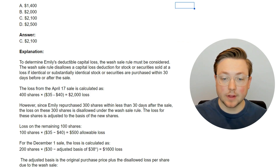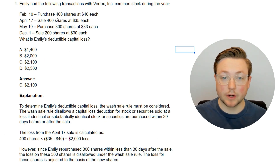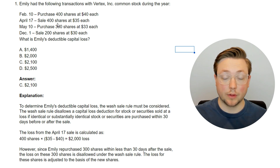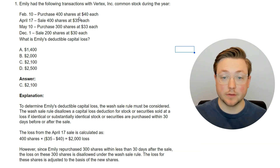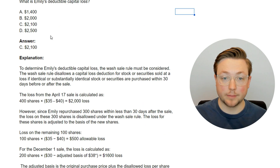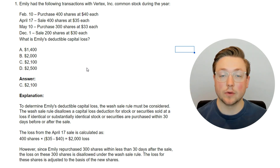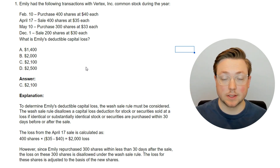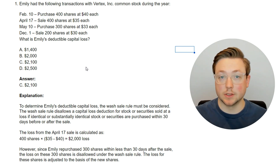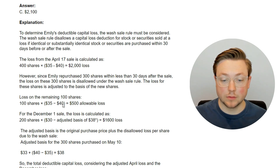So to recap: she bought back 300 of the shares she sold within 30 days, so the loss from those 300 was disallowed. Only 100 shares had an allowable loss, giving us $500. You also take the disallowed loss per share — the $5 — and add it to the basis for the next sale. It kind of carries over. As you'll see throughout these questions, they build on each other, and by the end of even just five or ten questions, you'll know a lot more about wash sales.